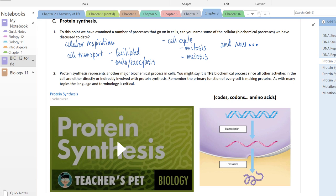Hopefully you stopped and gave it a thought. Maybe you thought of some biochemical processes like cellular respiration, cell transport including endoexocytosis, active transport, the cell cycle and reproduction, mitosis and meiosis. And now we're moving into a big one - protein synthesis, a major biochemical process occurring in our cells. You might say it's the biochemical process since all other activities in the cell are either directly or indirectly involved with protein synthesis.